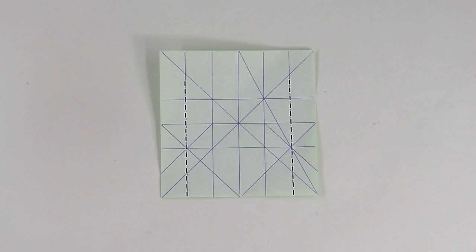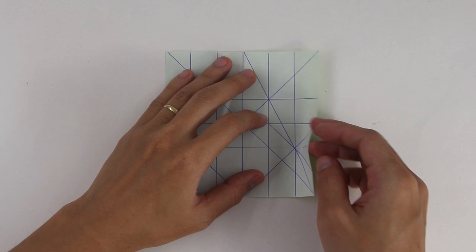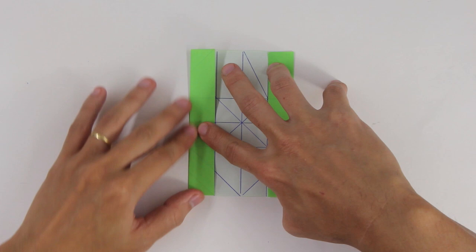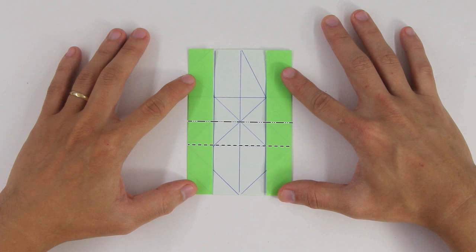Now, fold along these two lines. Now, make a mountain fold along the middle line and a valley fold along the other one.